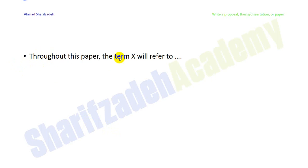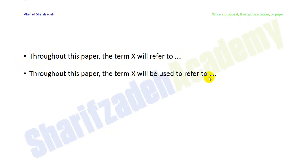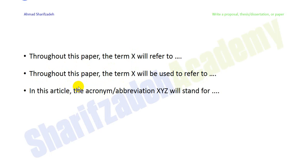You can use clichés and phrases like: 'Throughout this paper, the term X will refer to...' or 'By X, I mean this and that.' Another option: 'Throughout this paper, the term X will be used to refer to...' Or: 'In this article, the acronym or abbreviation X, Y, and Z will stand for...' These phrases make clear that the definition applies throughout this paper only.